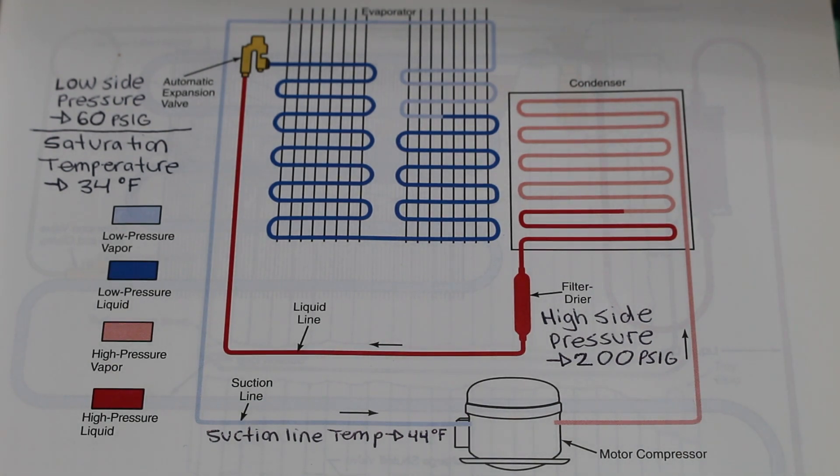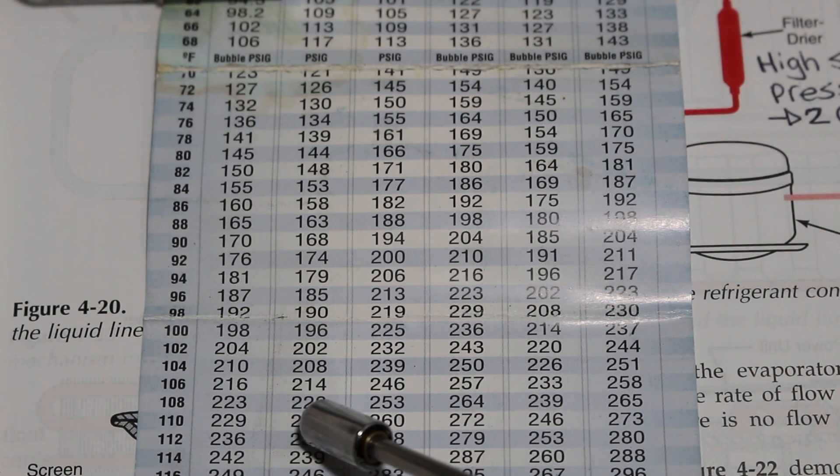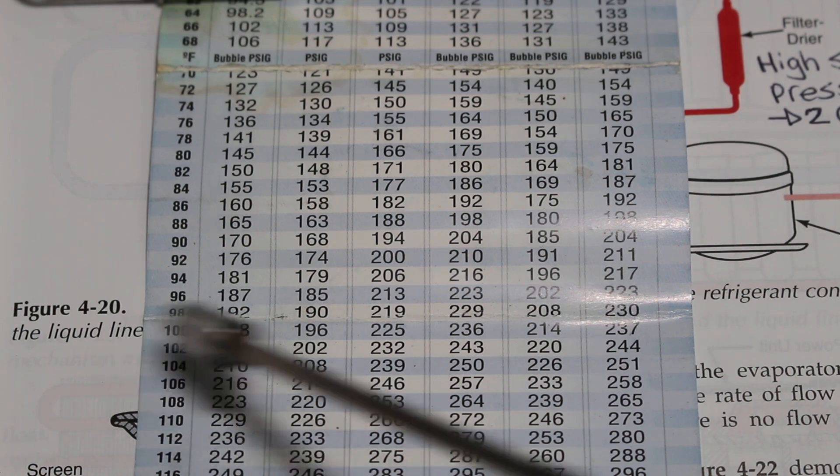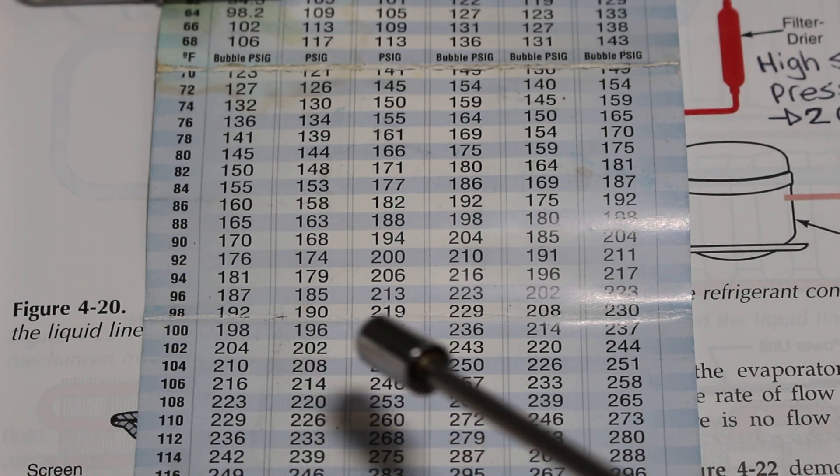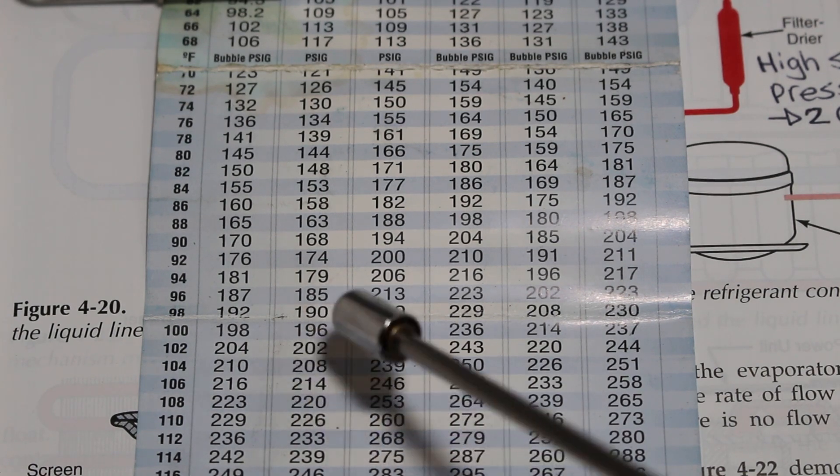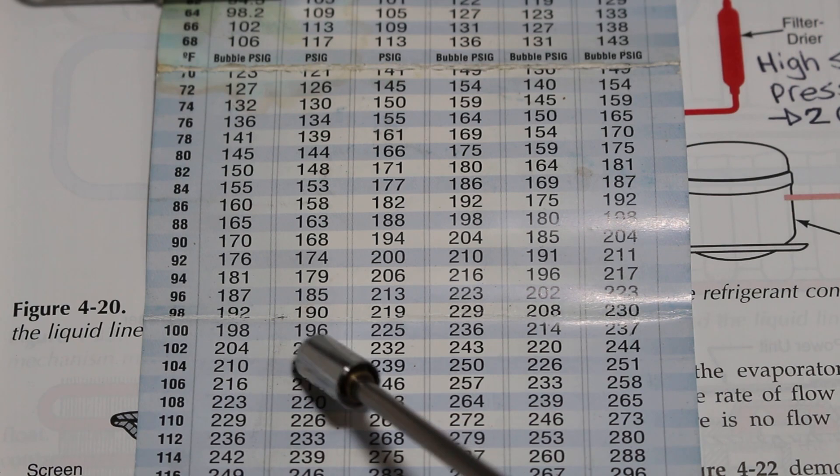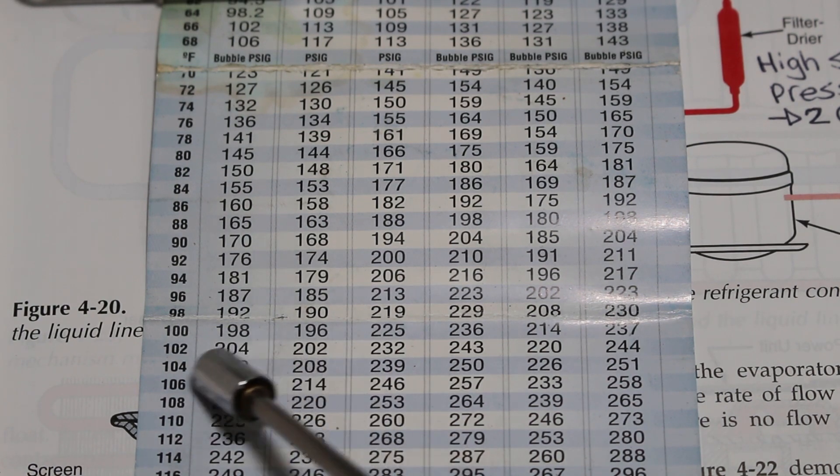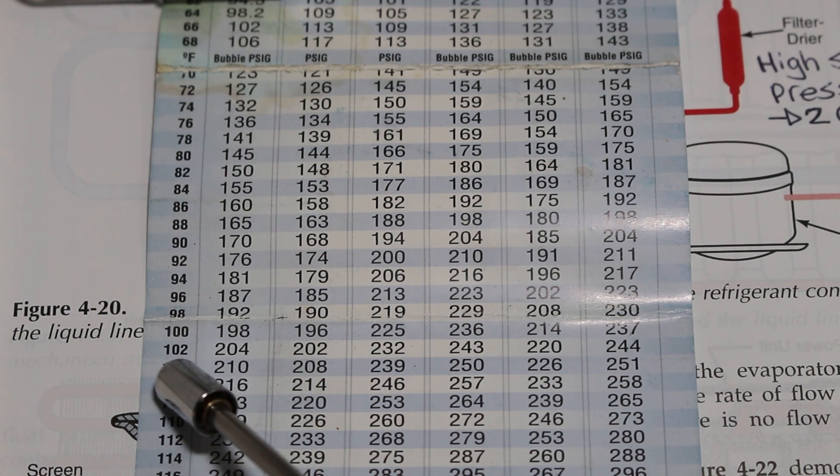Our next step is to convert that pressure into temperature using a PT chart to find our saturation temperature. The second column is represented as R22. This is our PSIG, and here is our temperature in Fahrenheit. For this example, we're using 200 PSIG. That would be in between 196 and 202, but just to keep things simple, we're going to use 202 and represent it as 200 PSIG. So, our condensing temperature is 102 degrees Fahrenheit.